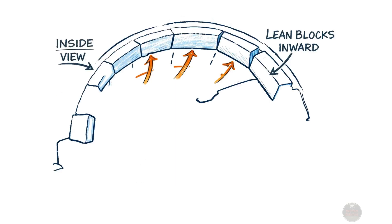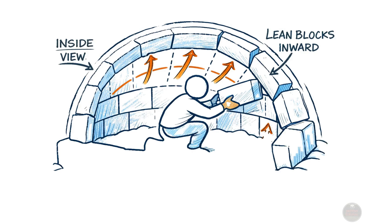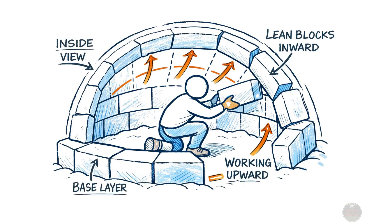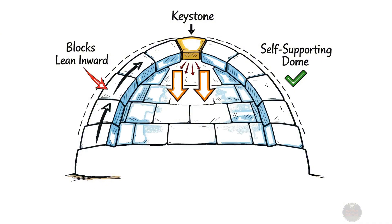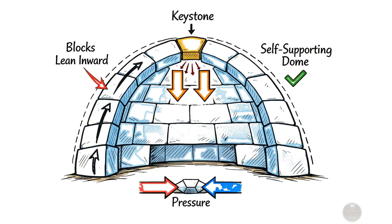Interestingly, you actually build the entire igloo from the inside out, carefully leaning each block inward. This crucial technique ensures the dome closes properly and maintains its strong, self-supporting shape.